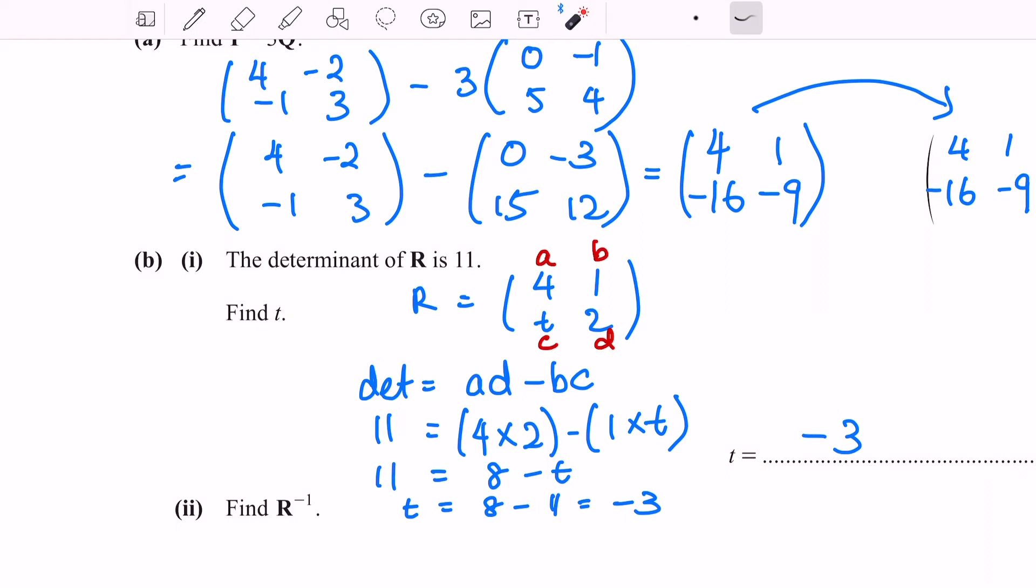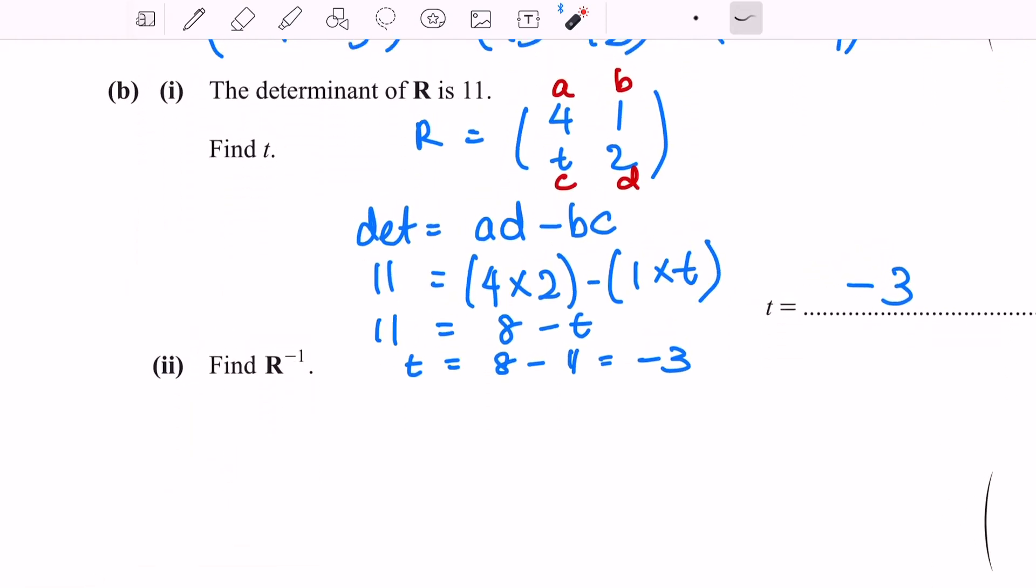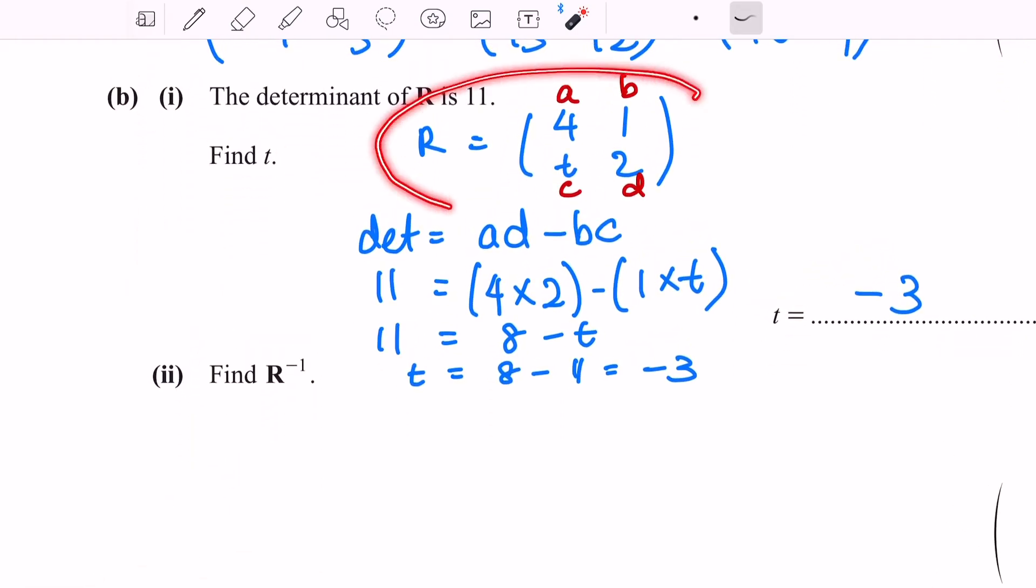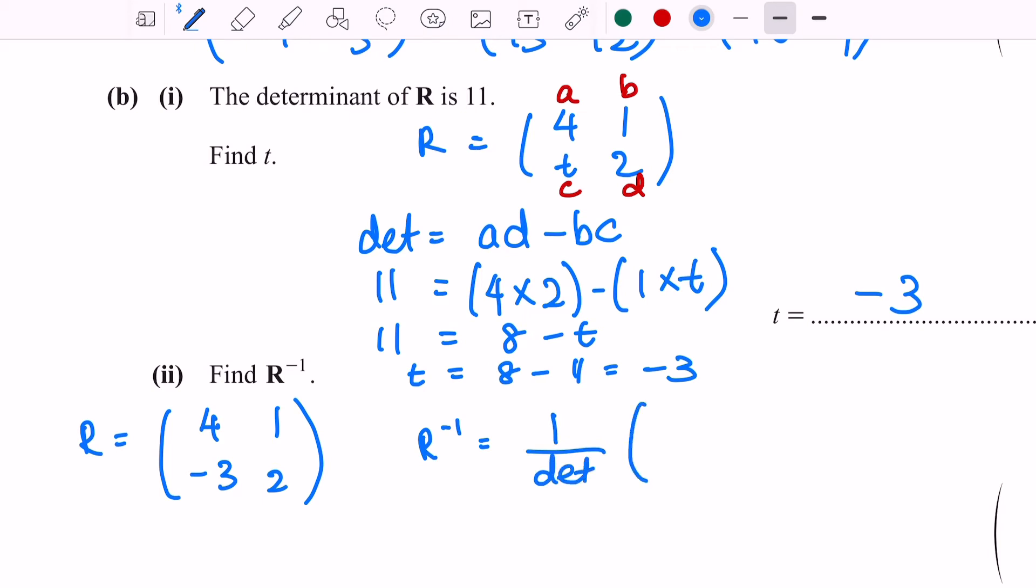Last question, part b(ii): find the inverse of R. I'm going to rewrite matrix of R. We have found t, so 4, 1, -3, and 2. Whenever you have inverse, the formula will be 1 over the determinant, bracket d, a, -b, -c.